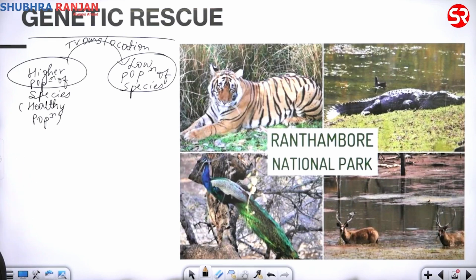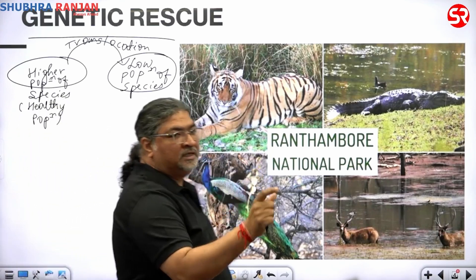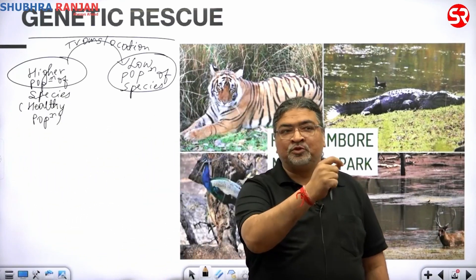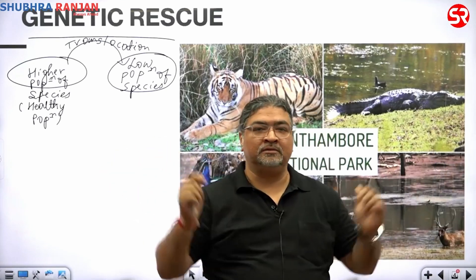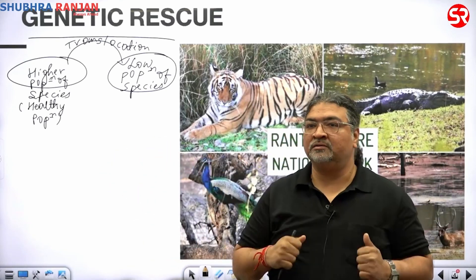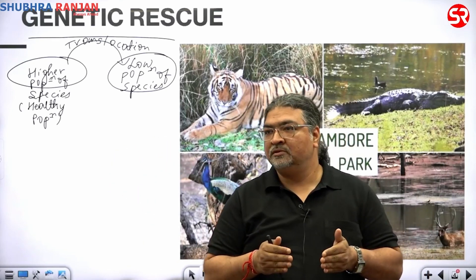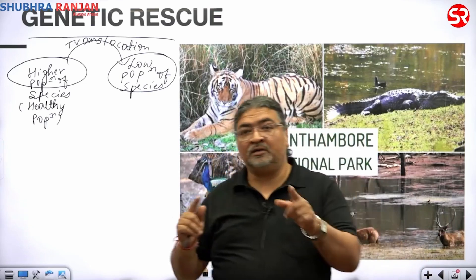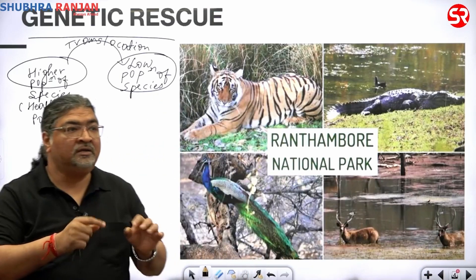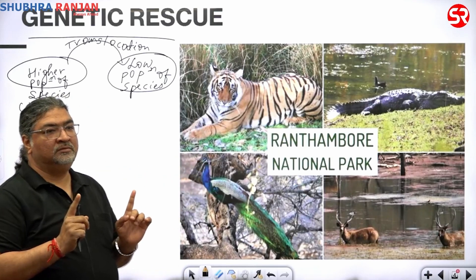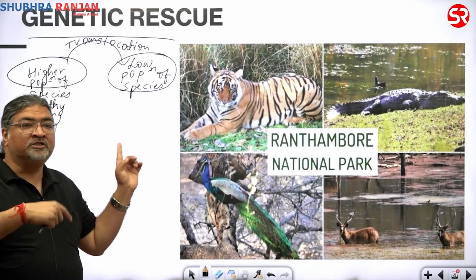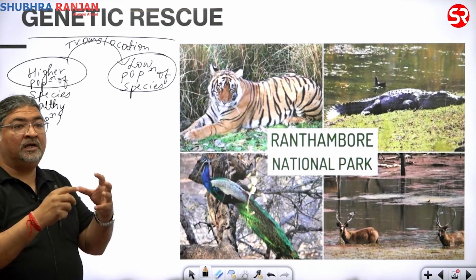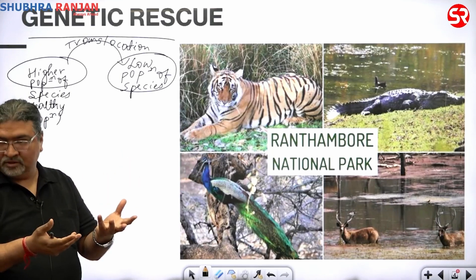One way to conserve any animal or increase population is breeding under captivity — that is ex situ, where we prepare a center, bring animals from the wild, and reproduce them. But genetic rescue is much better because we are bringing animals to their natural surroundings. This is one way of in situ conservation — the natural habitat where they are allowed to reproduce.